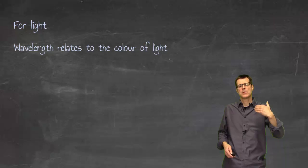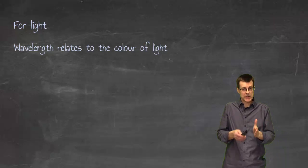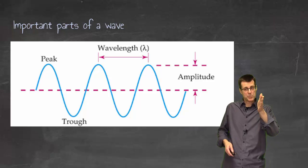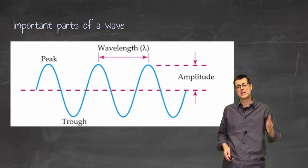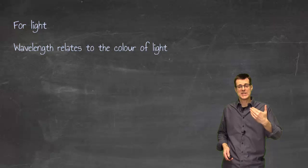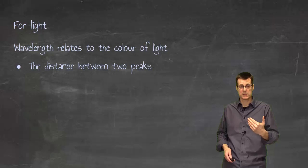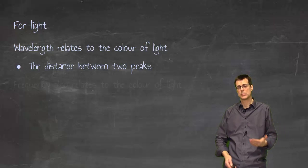When it comes to light, the wavelength of that light is the distance from one peak to another peak. That distance is the wavelength, and that is going to tell us something about the color of light.